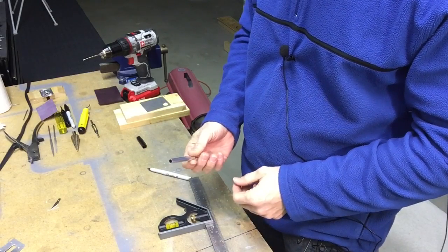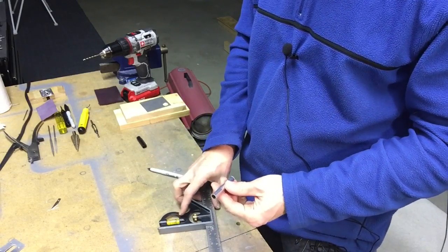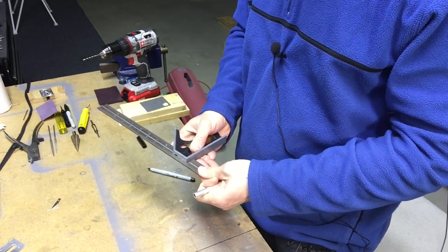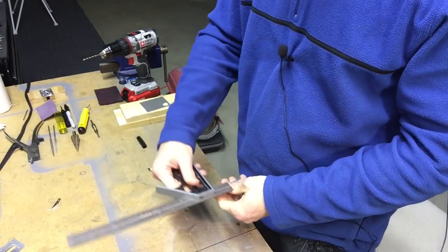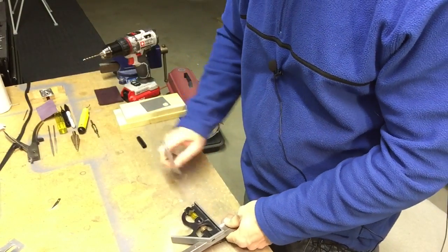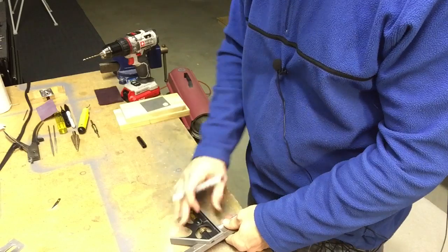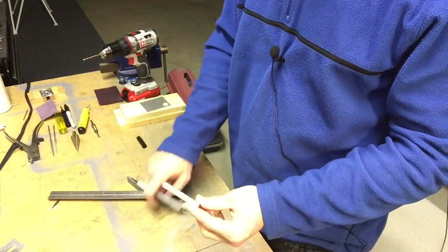Alright, the first step is to make the pieces we need: a tube and a plate. The tube, you guys can make this any length you want. Mine is an inch and a half, so I just mark an inch and a half and I'll cut this scrap piece of tube.